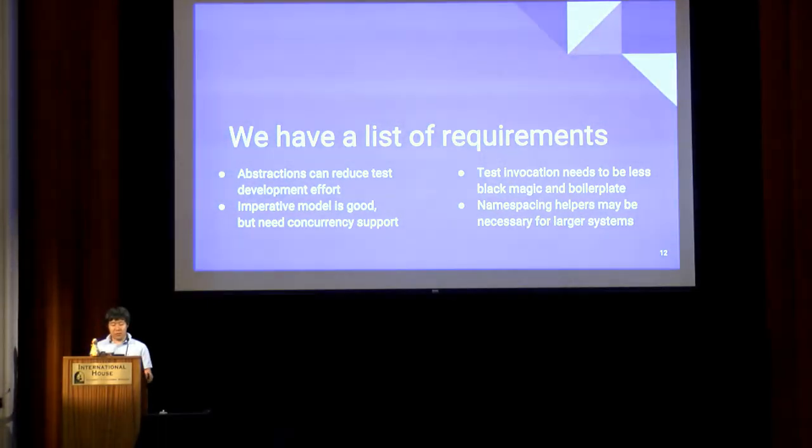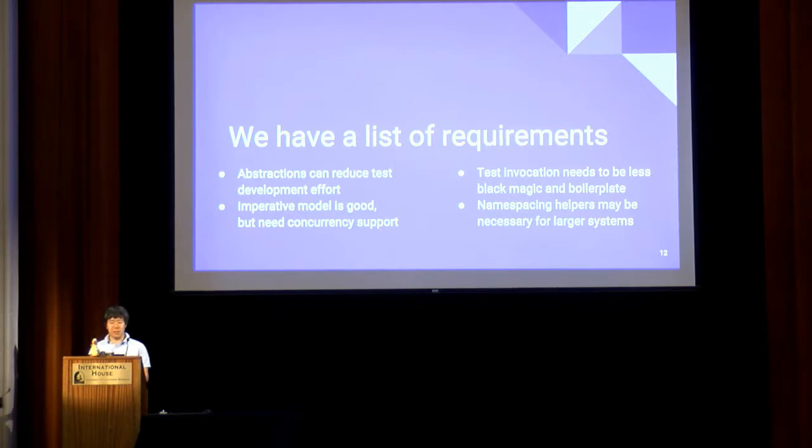Overall, those previous examples give me four high-level requirements. First, abstractions reduce test development effort. They're good. Second, imperative model is understandable, but it needs concurrency support so that these abstractions can be extended to sequences. And then if you get into the nitty-gritty, there's lots of opportunities for boilerplate reduction by minimalizing and disambiguating APIs.